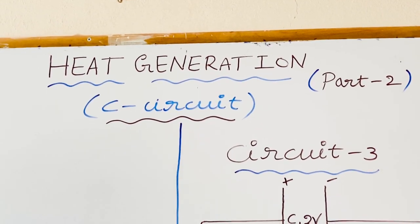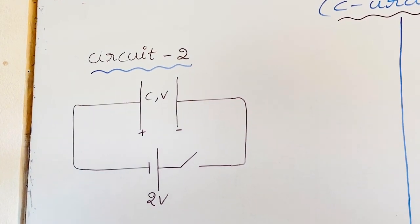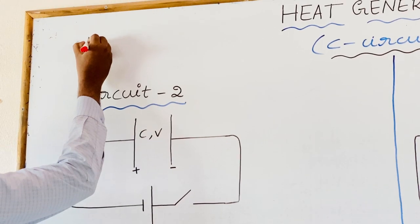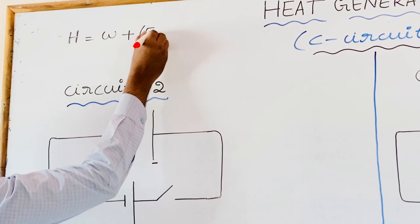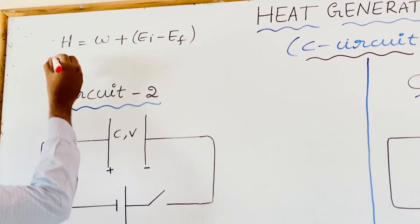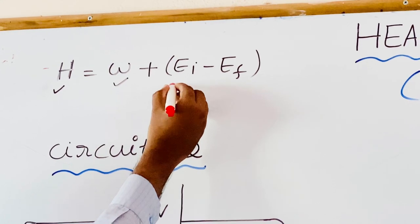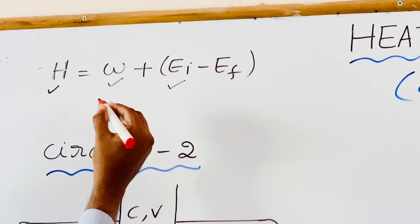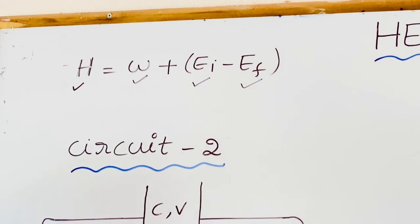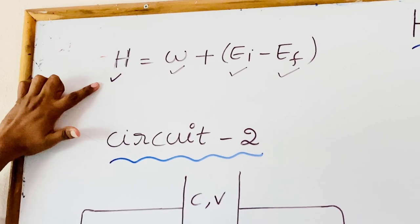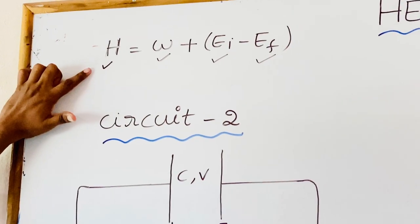Here we can discuss the previous expression. In the last episode, we obtained the expression: heat generated in the circuit H is equal to W plus EI minus EF. H indicates heat generated in the circuit, W indicates work done by the battery, EI is the initial energy of the capacitor before closing the switch, and EF is the final energy stored in the capacitor after closing the switch. We discussed this equation in detail in the previous video. Now we can try to see the applications of this expression.